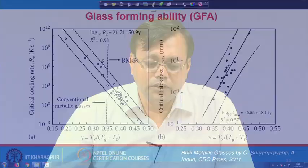We understood that the gamma parameter is a good value for explaining glass forming ability. In the next classes we will continue the discussion on glass forming ability. Thank you.